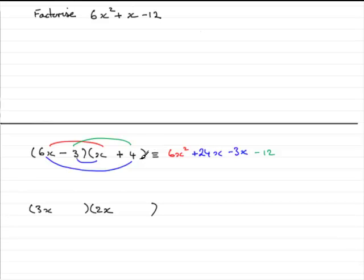To keep this short — you've seen in the previous tutorials how we try all the different combinations. You would go on and try a 6 and a 2, a 2 and a 6, maybe a 12 and a 1, a 1 and a 12, and you'd find that none of those combinations work. It is in fact the 3x times 2x combination that is the one that's going to work.